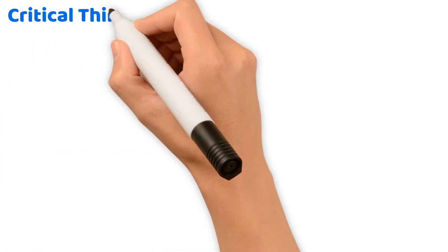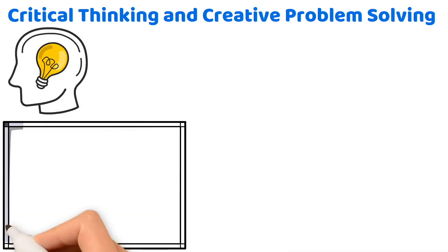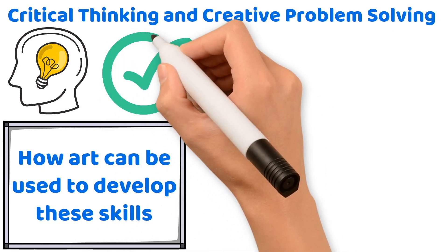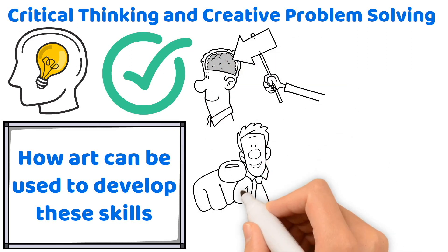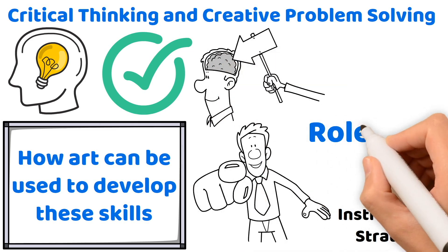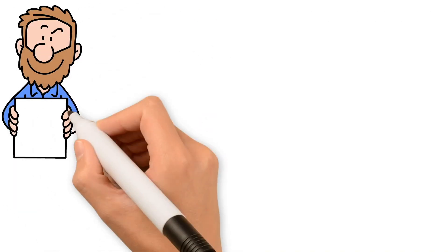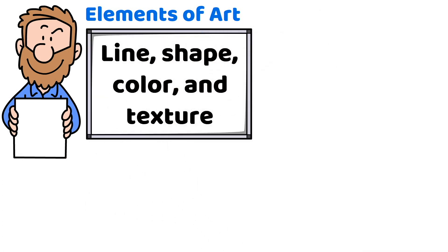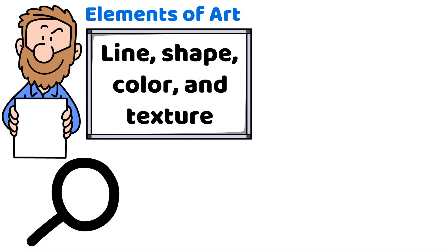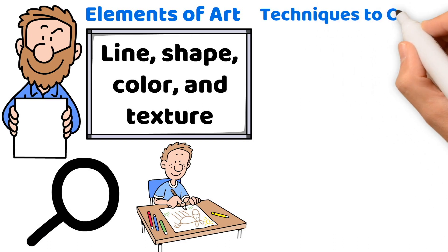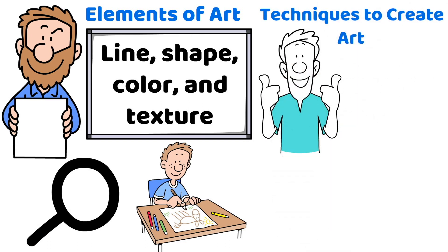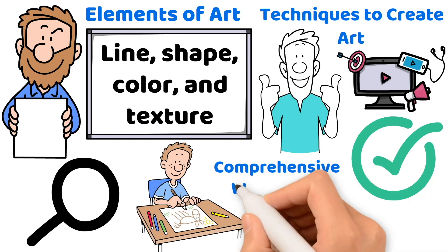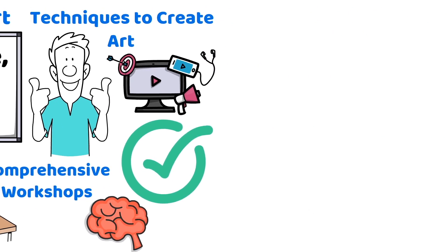Critical thinking and creative problem-solving in art perception is another vital area. Select the best answer that includes the use of questioning techniques to encourage deeper analysis of art, and if you are asked to select an instructional strategy, look for one that uses role play. Your teacher certification exam will also cover topics within the elements of art, including key terms like line, shape, color, and texture — look for answer options that introduce these elements through practical, hands-on activities. When it comes to techniques to create art in various media, the correct answers will likely involve demonstrating these techniques through comprehensive workshops and possibly the inclusion of expert guest artists to enhance the learning experience.